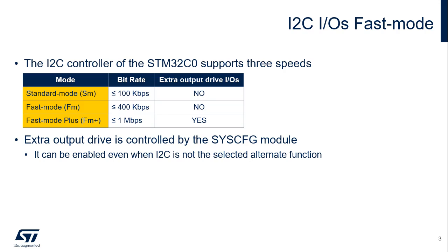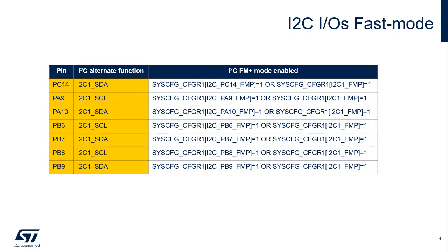Fast mode plus requires a high drive capability which is enabled in the SysCFG module. Since high drive is controlled at pin level, it's also available for other alternate functions. The high drive capability of the I2C1 pins can be configured per pin through the I2C_PC14_FMP, I2C_PA9 and PA10_FMP, and I2C_PB6 to PB9_FMP bits.